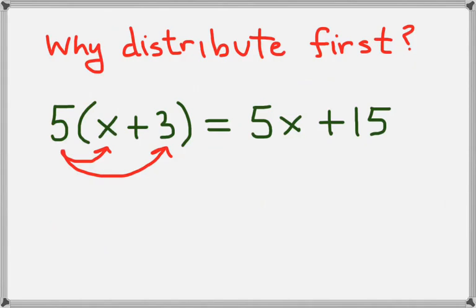So now we know that by getting rid of the parentheses, we get 5x plus 15 through the distributive property. So even though we don't know the value of x, we can still get rid of those parentheses.